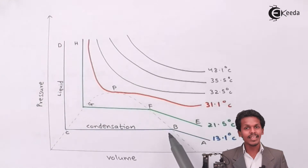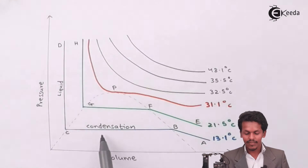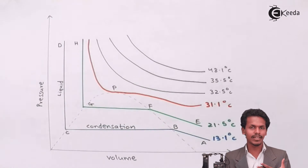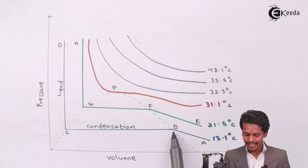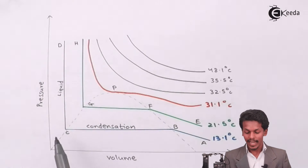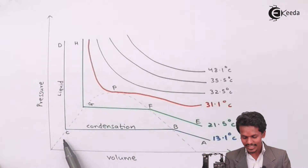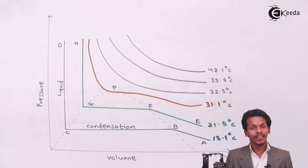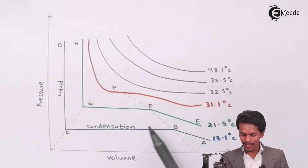At point B, condensation starts, and it continues until point C where the carbon dioxide is completely liquefied. Even if pressure is increased beyond point C, the volume remains constant — meaning we cannot compress the gas any further once it is fully liquid. This was the isotherm described by curve A-B-C-D.